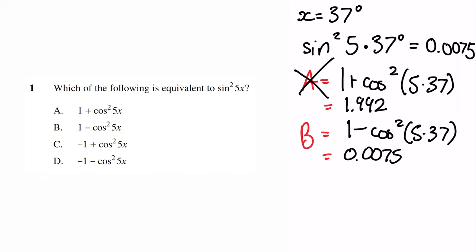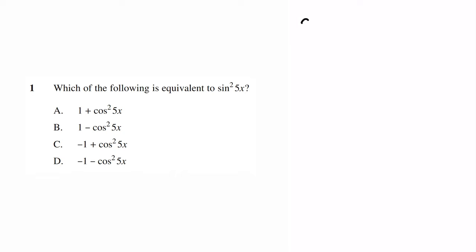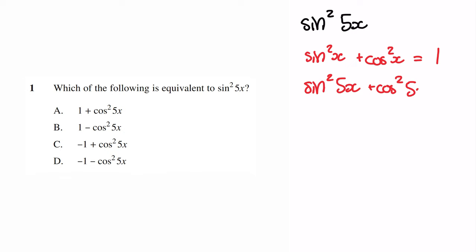Now if I wanted to do it properly, I'd use trigonometric identities. I'm trying to convert sine squared into cos squared, as all of the multiple choice answers are in cos squared. Recall the identity: sine squared x plus cos squared x equals 1. If we replace x with 5x, we get sine squared 5x plus cos squared 5x equals 1. Moving cos squared 5x to the other side gives sine squared 5x equals 1 minus cos squared 5x, so our answer is B.